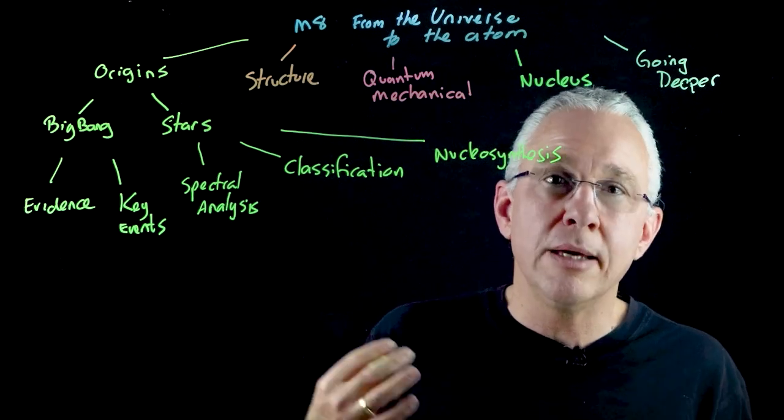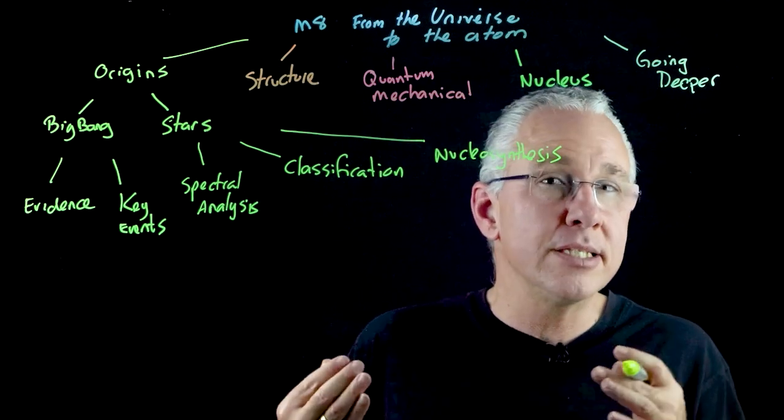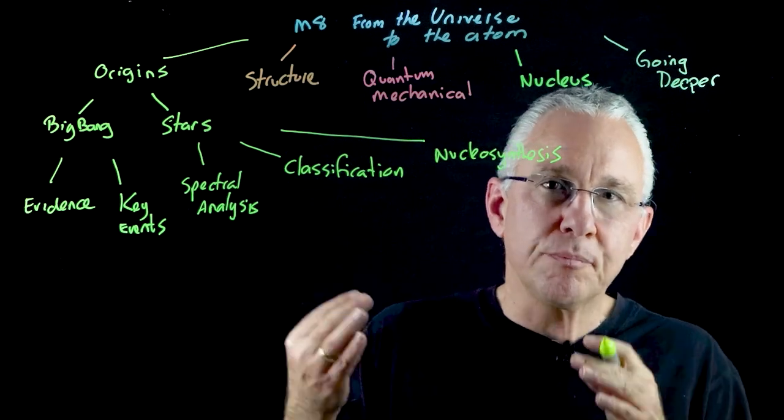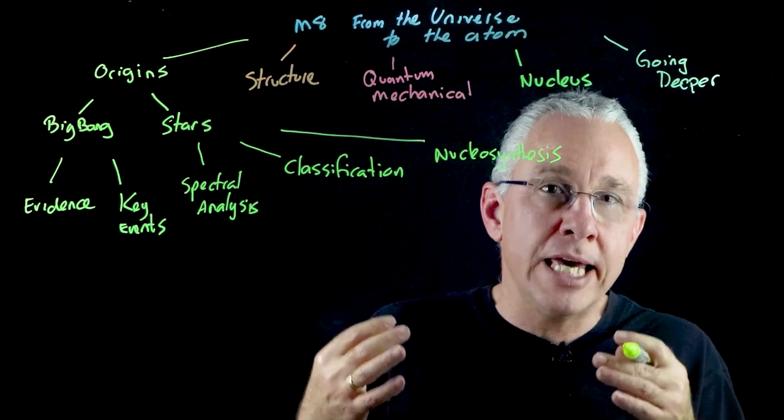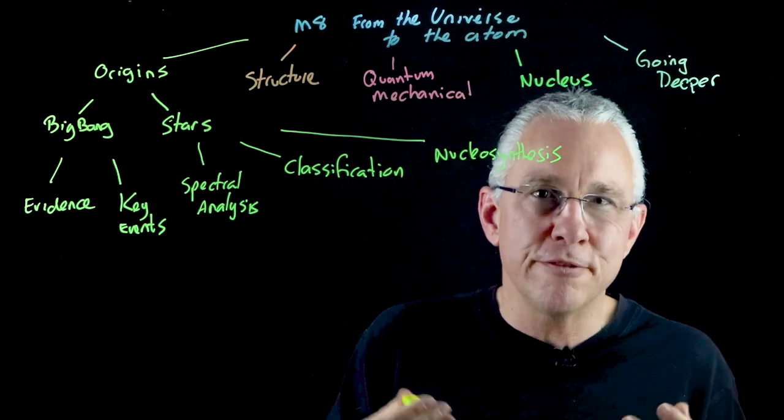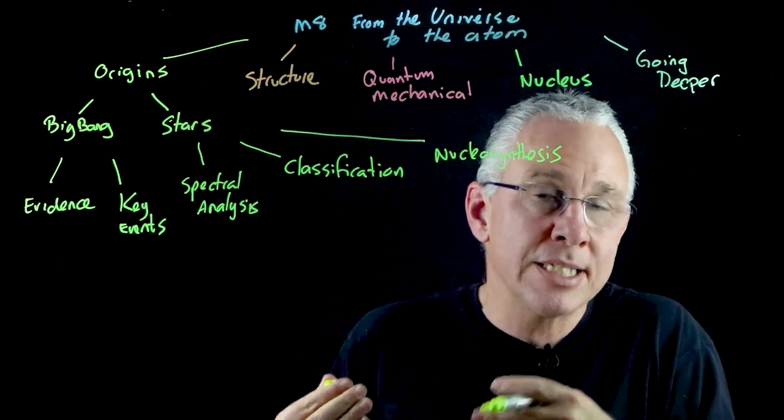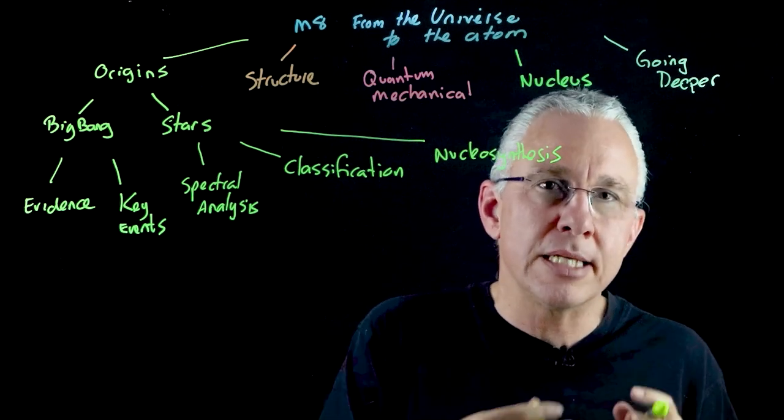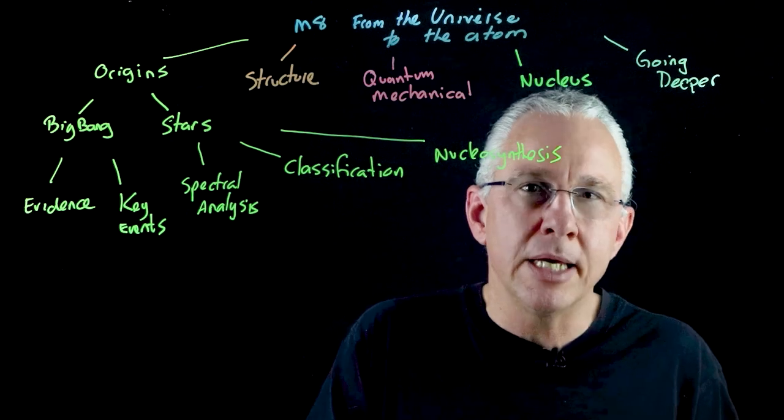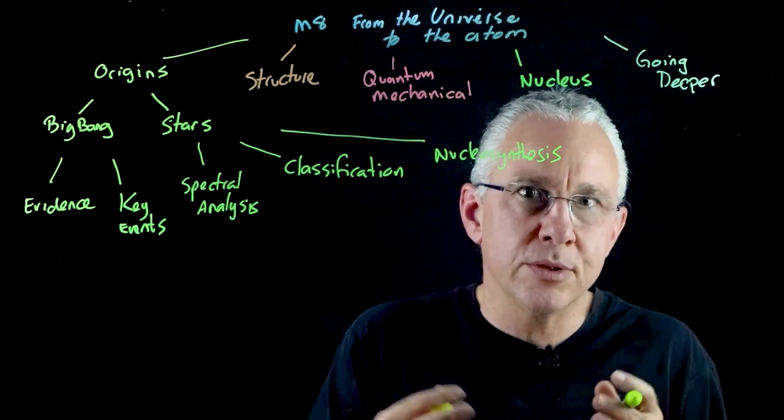There's also the triple alpha cycle. And then there is the CNO cycle. Well, in all cases, they actually are a result of energy being produced by the loss of mass because the mass of the reactants, the hydrogen, is greater than the mass of the products, which is the helium. And so we have this process of E equals MC squared.